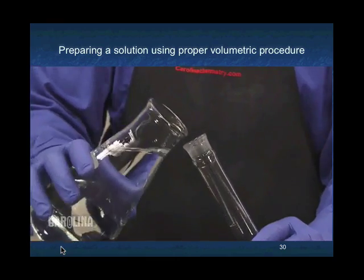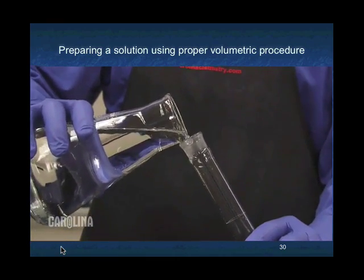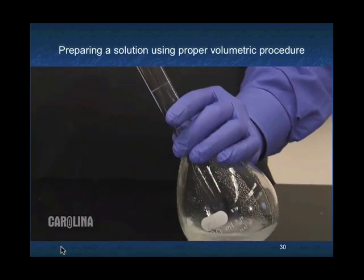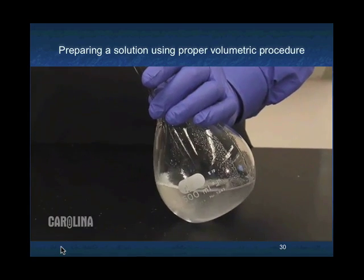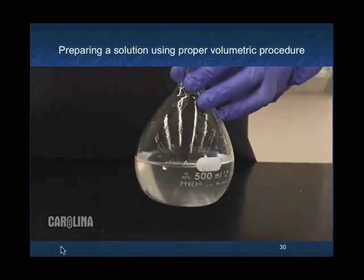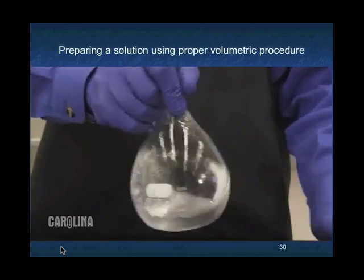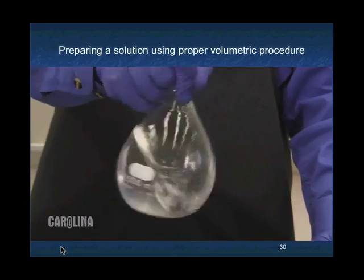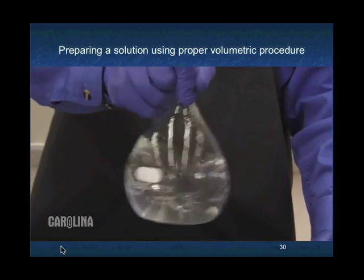Next, add enough water so that the bulb area at the bottom of the flask is approximately half full. This will give you enough room to swirl the liquid, allowing the solute to completely dissolve. Again, it's critical that all of the solute is dissolved prior to filling to the appropriate volume, as different solutes may take up more volume in solution than their undissolved salts.